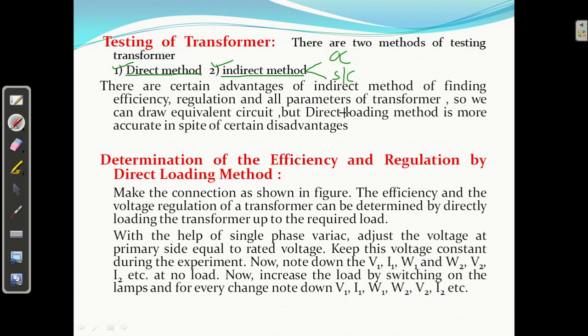This direct loading method, where do we use it? For what type of transformer? Low rating transformer. Direct method we will use for low rating transformer. Indirect method you can use for any rating. So we will go for indirect method for high rating machine, but for low rating we will go for direct loading. It is giving more accurate result.